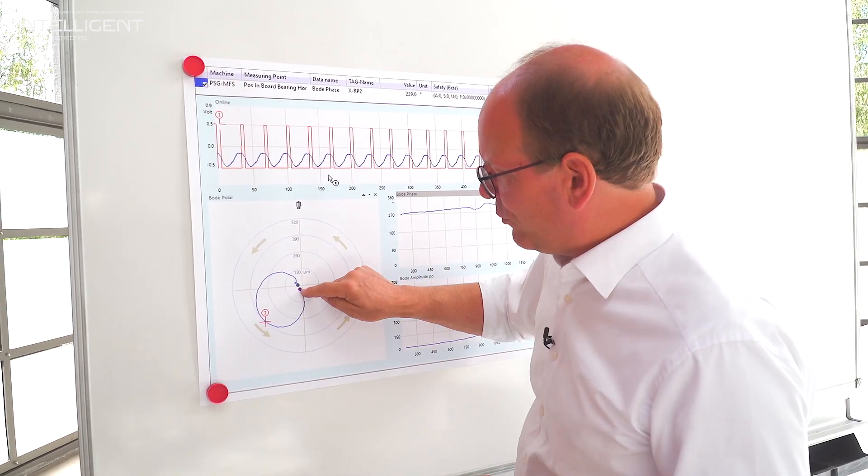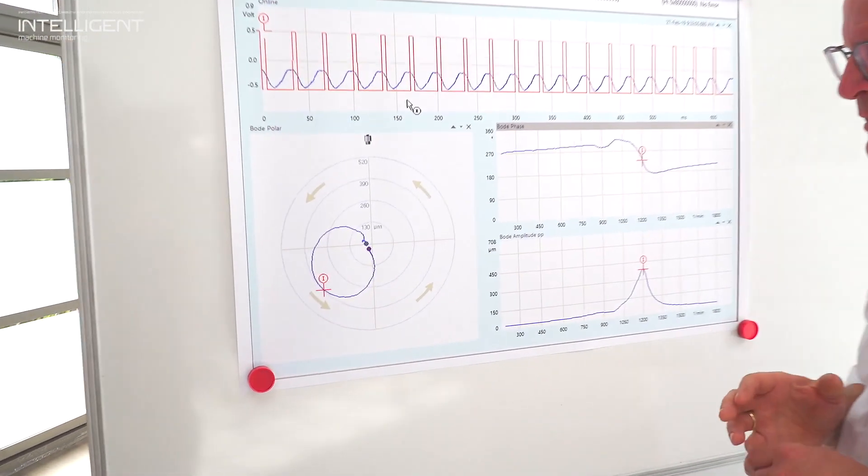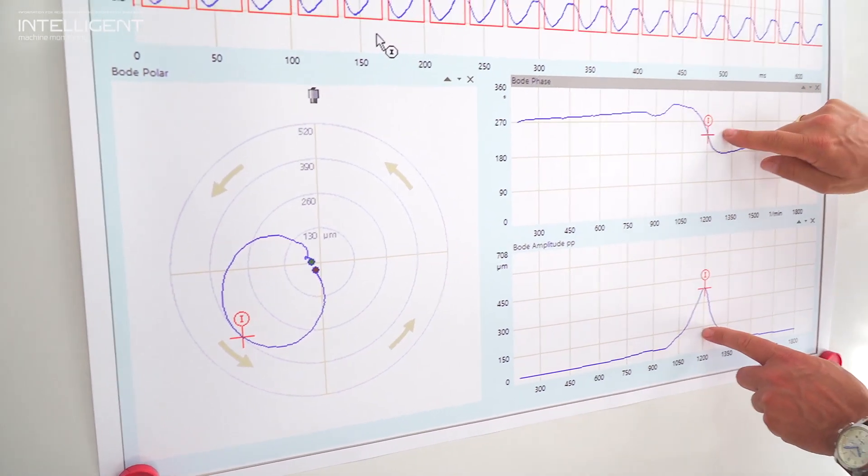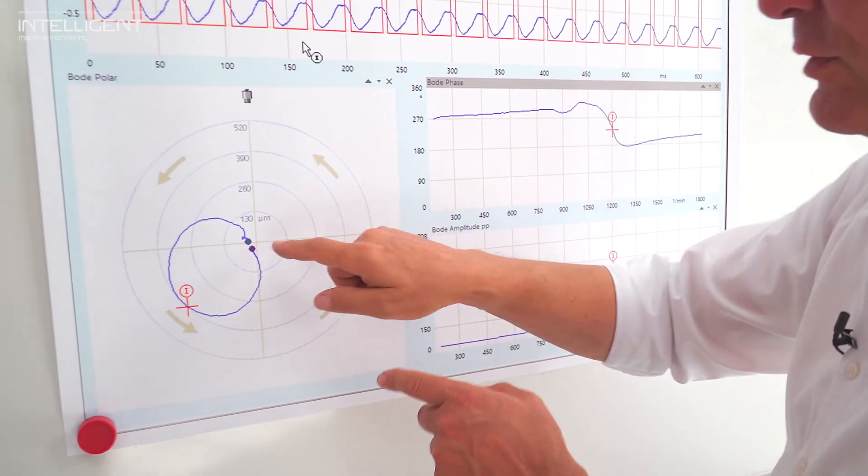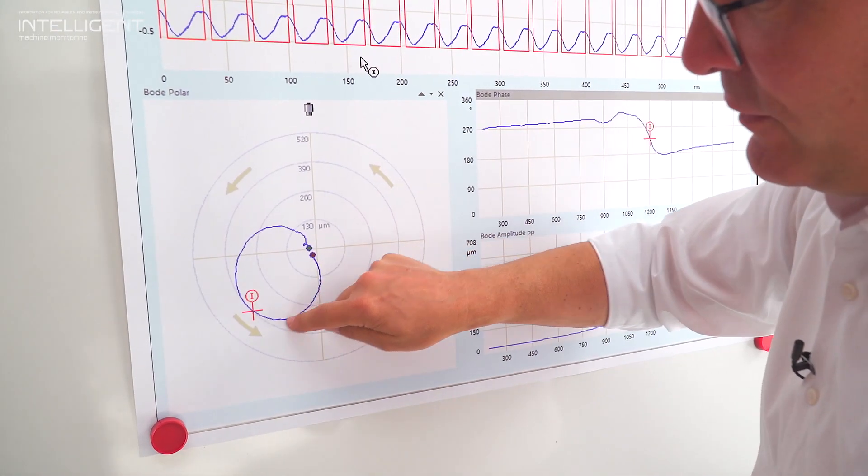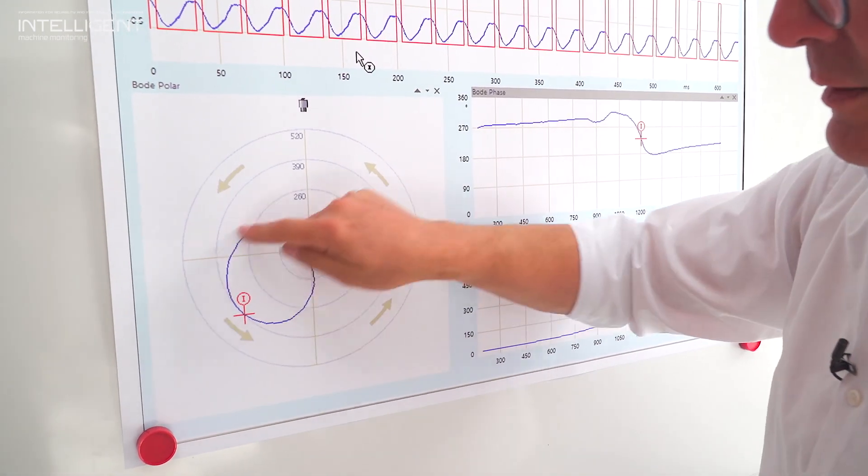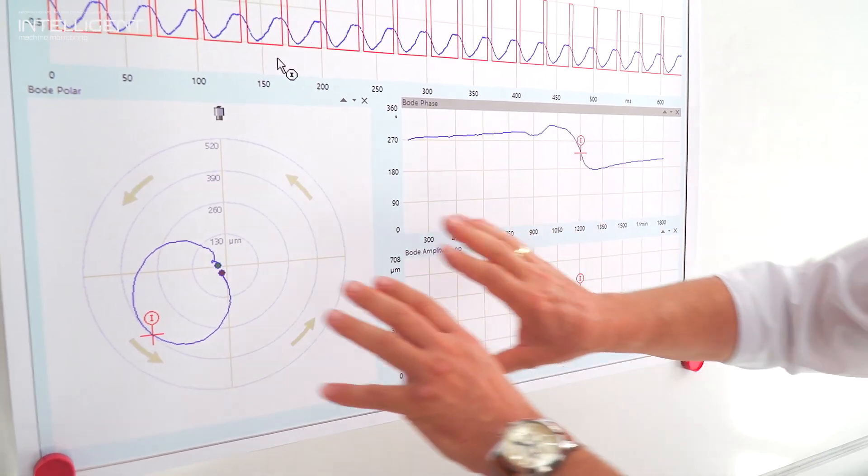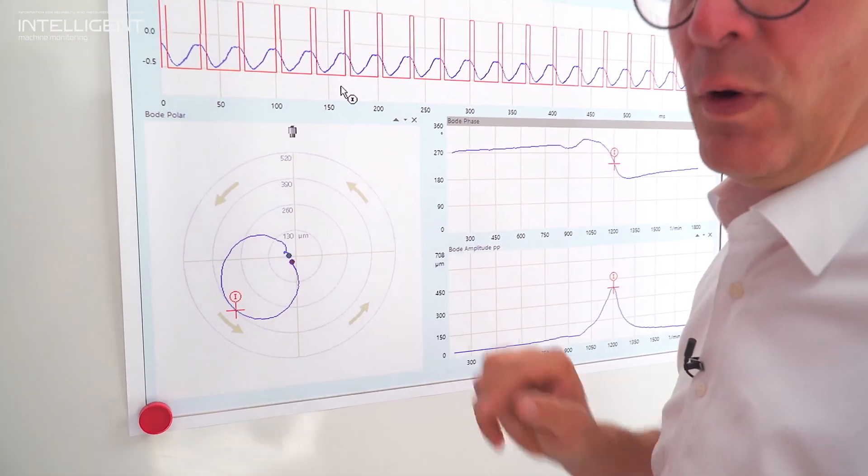We see here the red point that is the starting point. Then the machine starts up. By using these two information we are creating vectors. We see here all these different vectors and that looks like a kind of orbit. Here we have the Bode information and here we create the Bode Polar Plot.